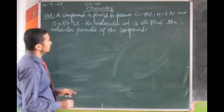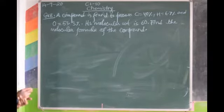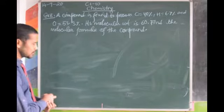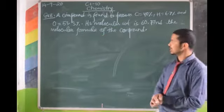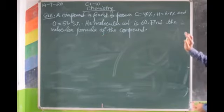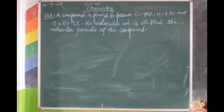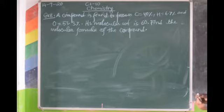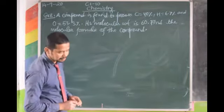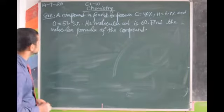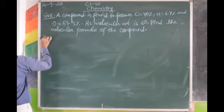This will be a revision — last class using percentage composition we determined empirical formula. So whenever percentage composition is given, first find the empirical formula, and then using the molecular mass given, find N to get the molecular formula.